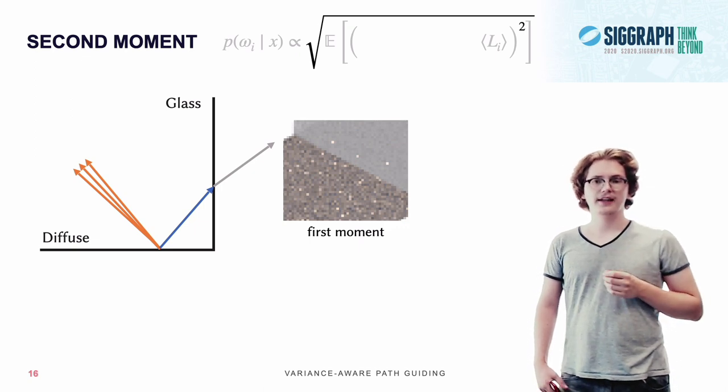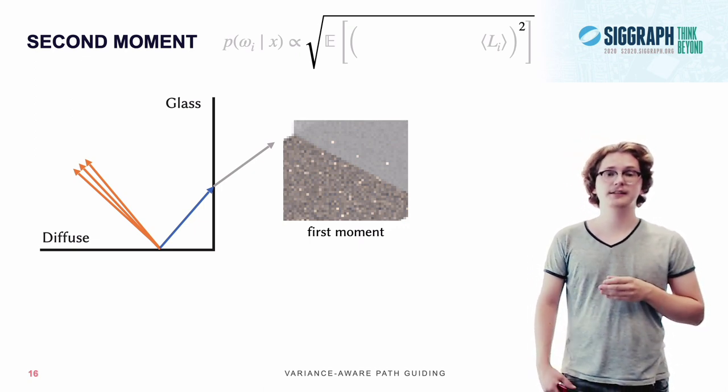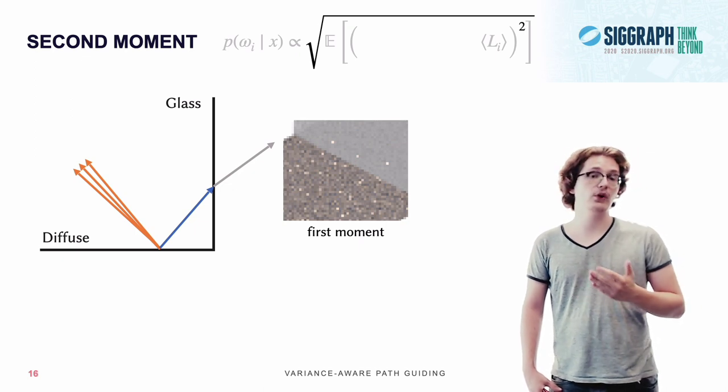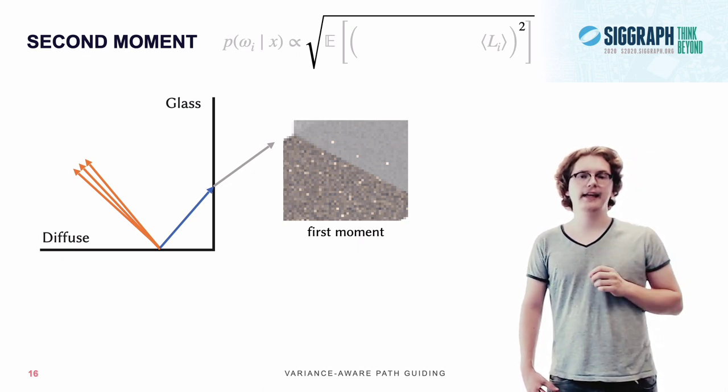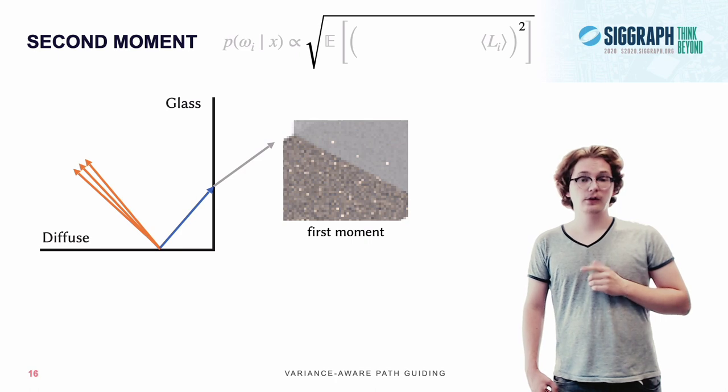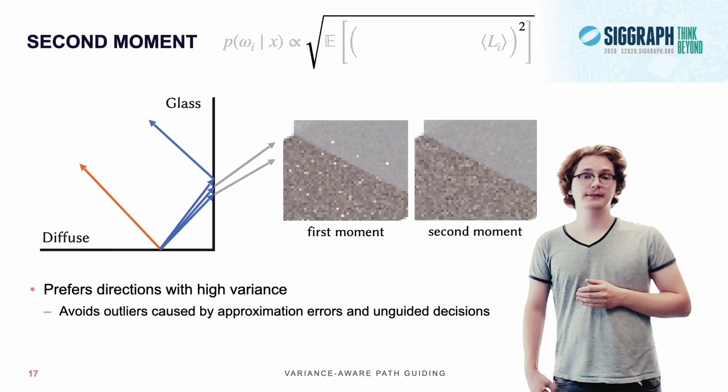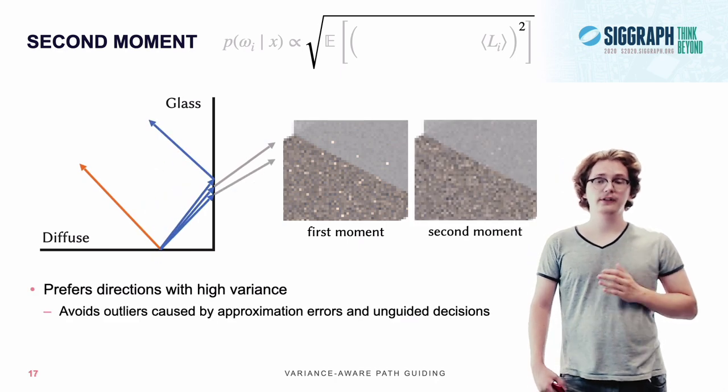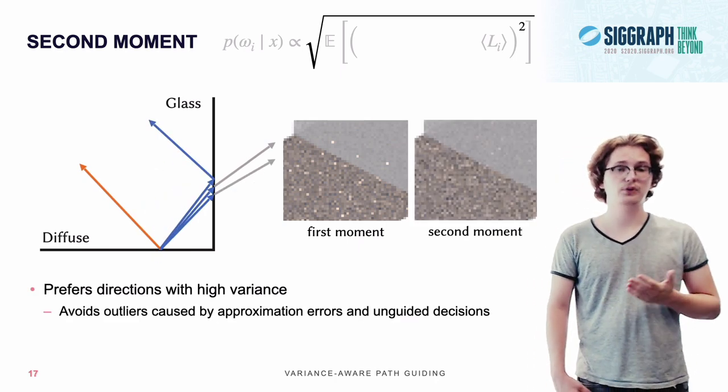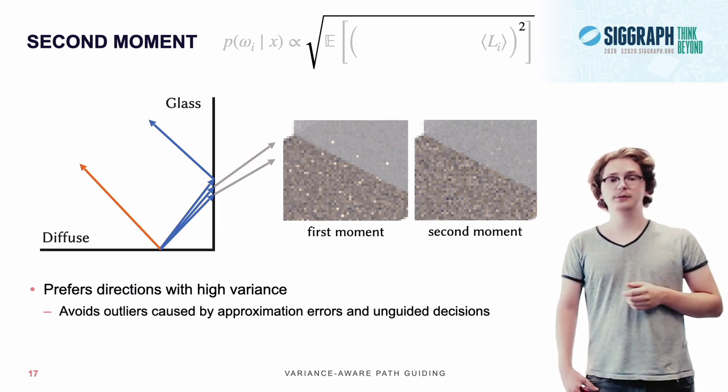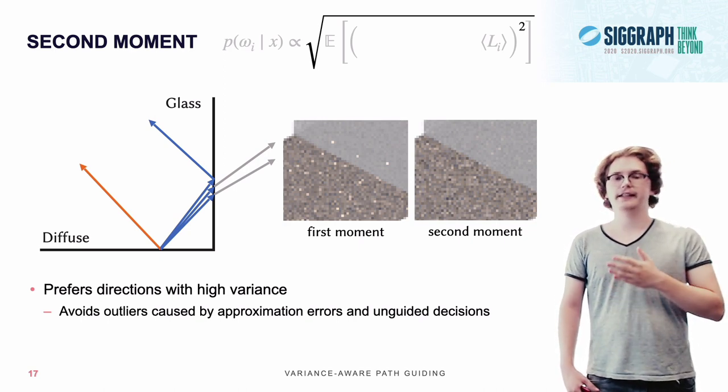Now, by using the second moment, which essentially just means by squaring our estimates before averaging them and then taking the square root of the average, we're actually focusing our sampling on the regions that cause high variance, or in other words, the glass pane in this scene, which means we're avoiding these outliers that can be caused by approximation errors in your guiding distribution or unguided decisions like shown here.